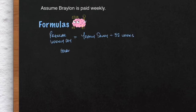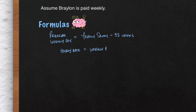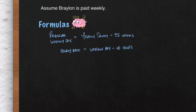Next, you're going to calculate his hourly rate. We need this in this particular problem because his job position actually gives him overtime pay. With that, you're going to take his weekly pay and divide by 40 hours. You're going to need this information to calculate his overtime pay.